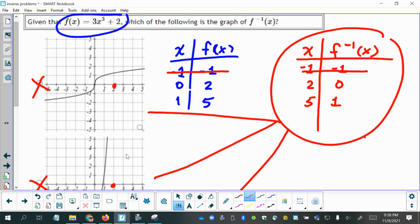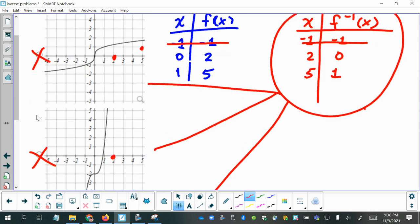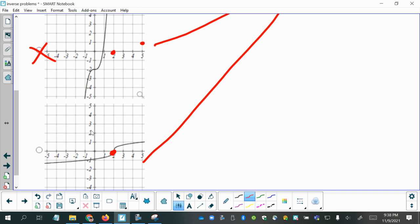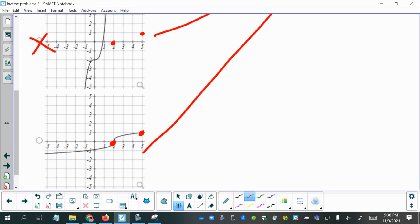But let's try another ordered pair. Let's try 5 comma 1. Again, you see 5 comma 1 does not fall on this graph. 5 comma 1 does not fall on this one. But it does fall on this one. So this is our answer here.